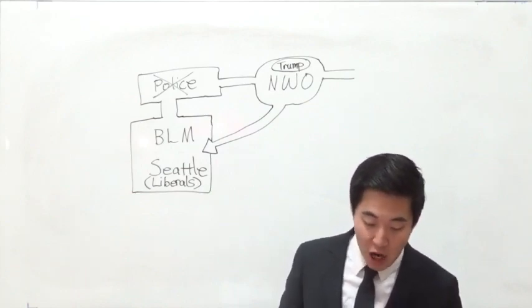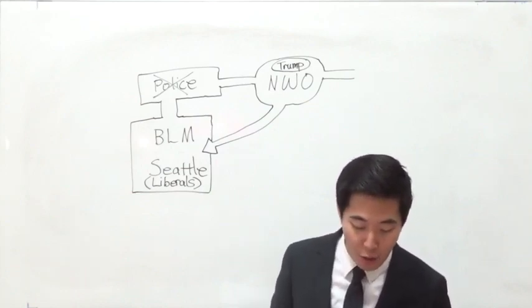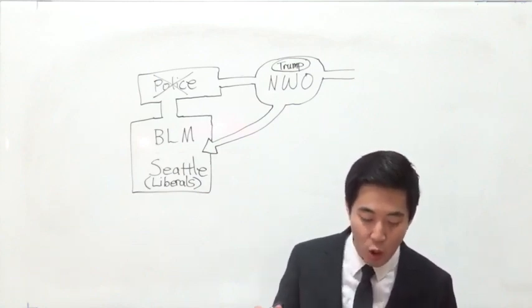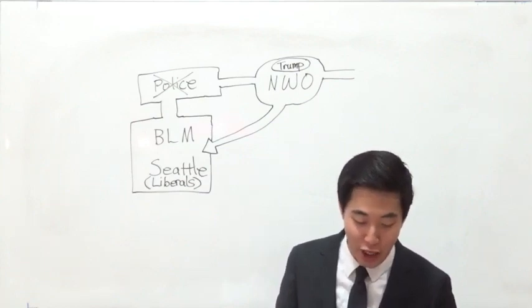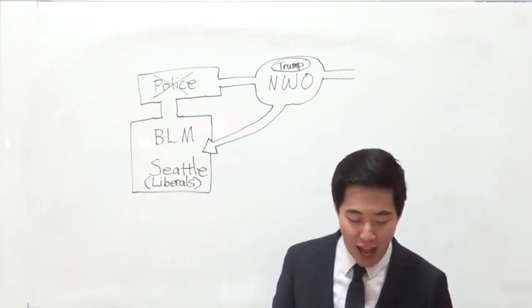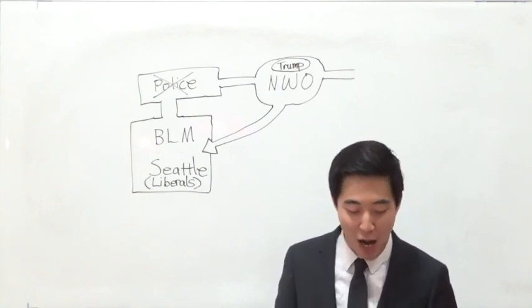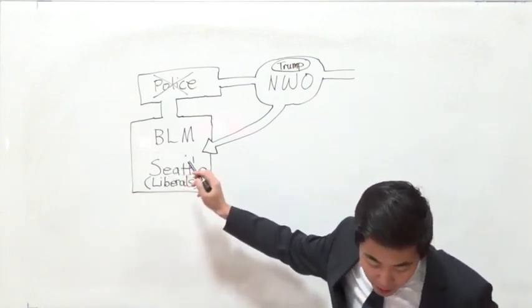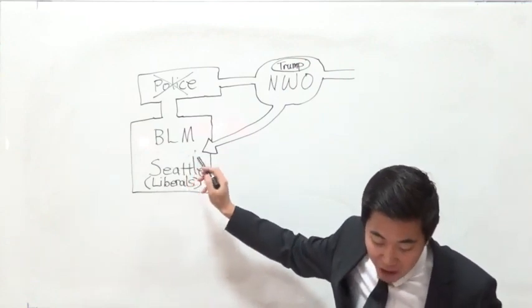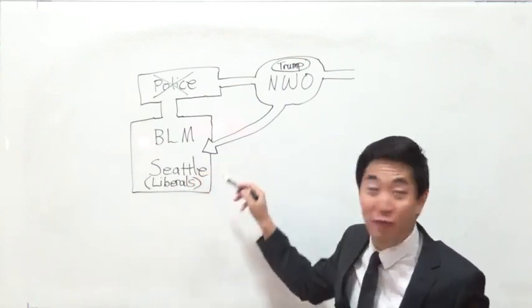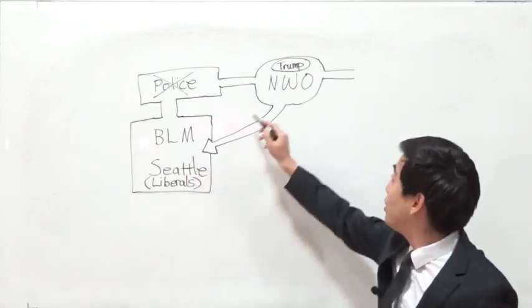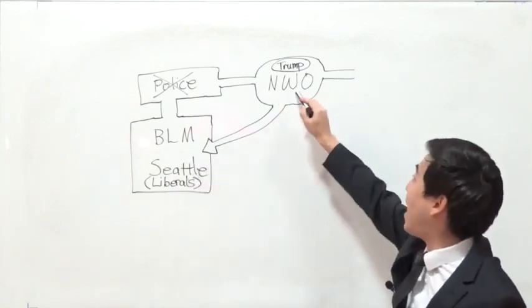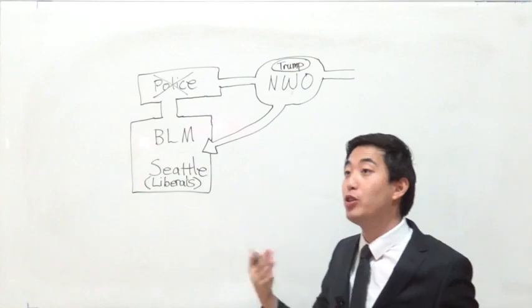One Seattle police officer with knowledge of internal deliberations, the city's leadership in chaos, and he said this, quote unquote, The mayor has made the decision, this is so true, to let a mob of 1,000 people dictate public safety, see this? Dictate public safety policy for a city of 750,000. See what they're trying to do? See? Just this group right over here dictates everything for these guys to do things, right?